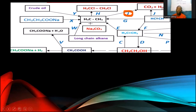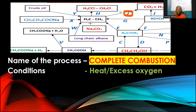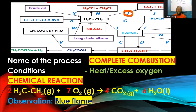Process I — ethane undergoing combustion to form CO₂ and water — is complete combustion. The conditions are heat and excess oxygen. The observation: saturated hydrocarbons like alkanes burn with a blue flame in complete combustion.